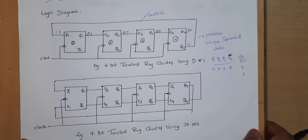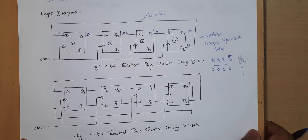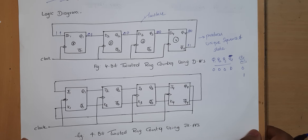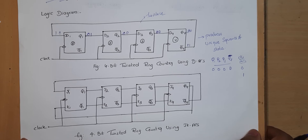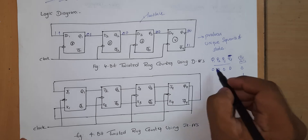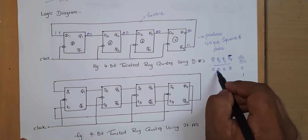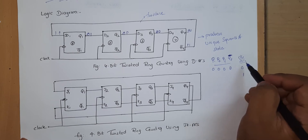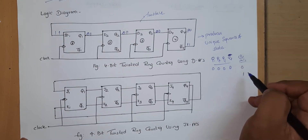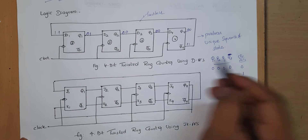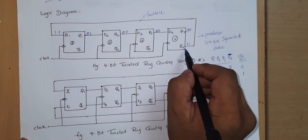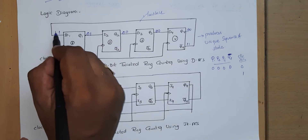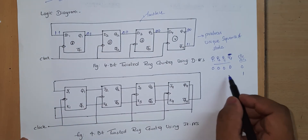Let us see the working principle of this twisted ring counter. Initially the flip-flops are at a reset condition, meaning the output Q1 Q2 Q3 Q4 is 0 0 0 0. At the 0th clock pulse, since Q4 is 0, Q4-bar is 1, and this 1 is connected to the input of the first flip-flop.